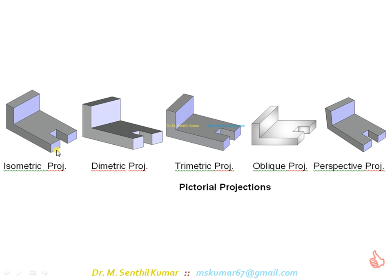This is how the isometric projection of an object looks. If the same object is viewed in dimetric, this is how it looks. Under trimetric, this is the view. Under oblique, this is the view. Perspective is a distinct pictorial projection — it is another kind of pictorial projection, and it looks like this.